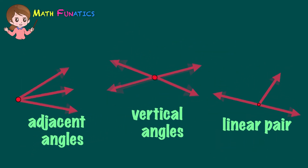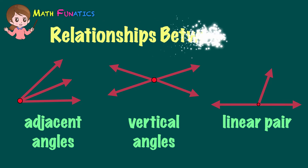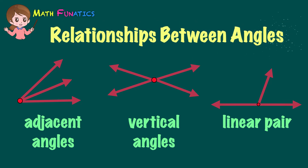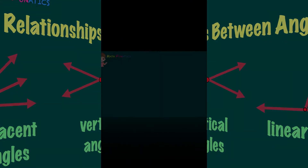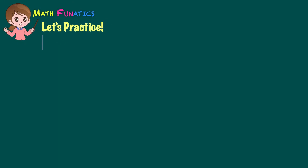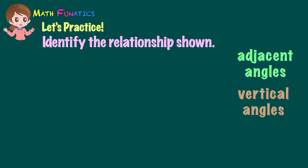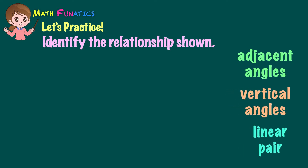All three pairs of angles show the relationships between angles. The tripod of the camera shows adjacent angles, the drumsticks show vertical angles, and the wheelbarrow illustrates angles forming a linear pair. Now let's practice what you've learned today — identify the relationships shown and tell if the angles are adjacent, vertical, or form a linear pair.